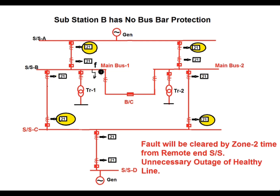Now consider that a fault occurs at point F, that is at the main bus 1 section. Substation B also has a load connected by transformer 1 and transformer 2, where transformer 1 and 2 are connected to main bus 1 and main bus 2 respectively. Due to the fault at point F and the absence of bus bar protection at substation B, consider that no bus bar protection exists. Since there is no bus bar protection, the 21 relay at the local end of the feeder will sense this fault at zone 4 location.